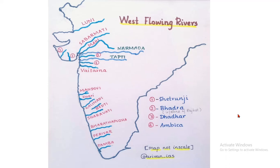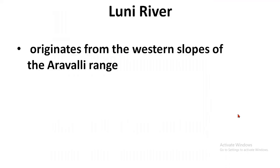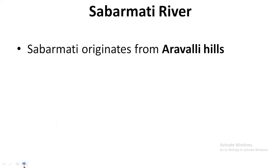West flowing rivers in detail. The first river is Luni river. Luni river originates from the western slopes of the Aravalli range. Next, Sabarmathi — Sabarmathi also originates from the Aravalli hills. So both Luni and Sabarmathi originate from the Aravalli hills.